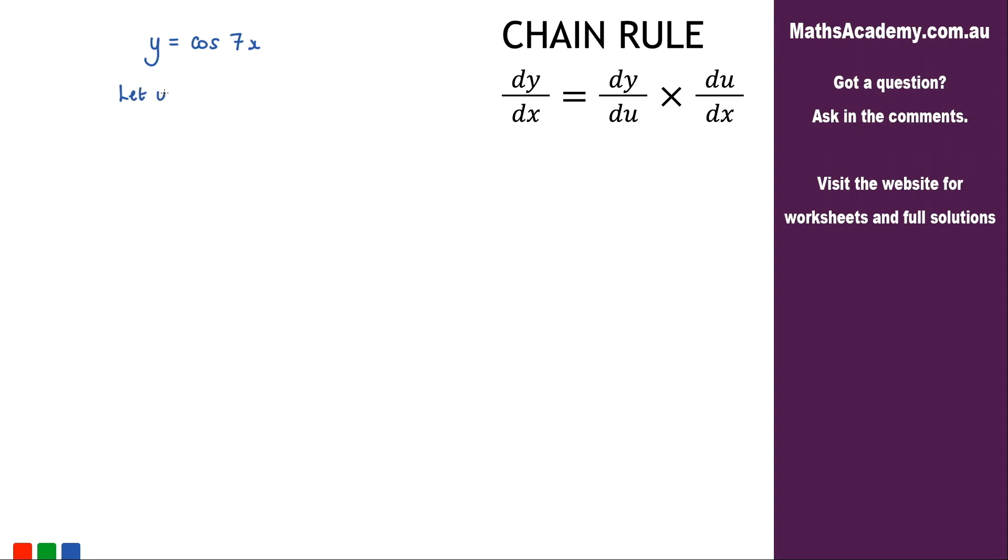We can say let u equal 7x, and then we go ahead and differentiate that. So du by dx, well that's just going to be equal to 7.